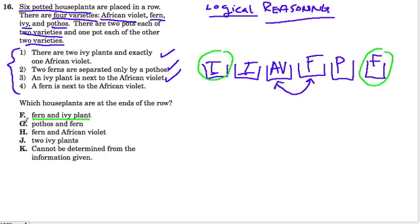One thing I want to do is cross out G. That can't be possible, because the pothos can never be at the end because it's wedged between two ferns. If you remember, it says it right here, two ferns are separated only by a pothos. So the pothos has to be between the two ferns and can never be at the end of a row. So we've already eliminated one of the choices.